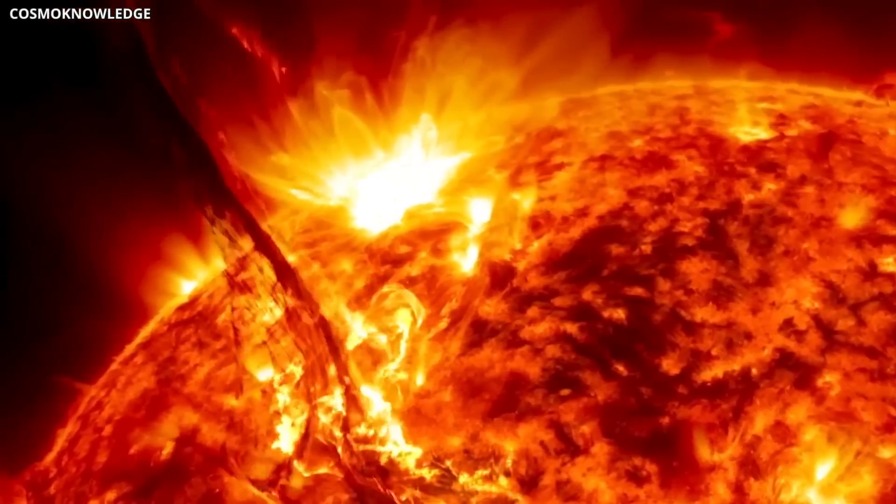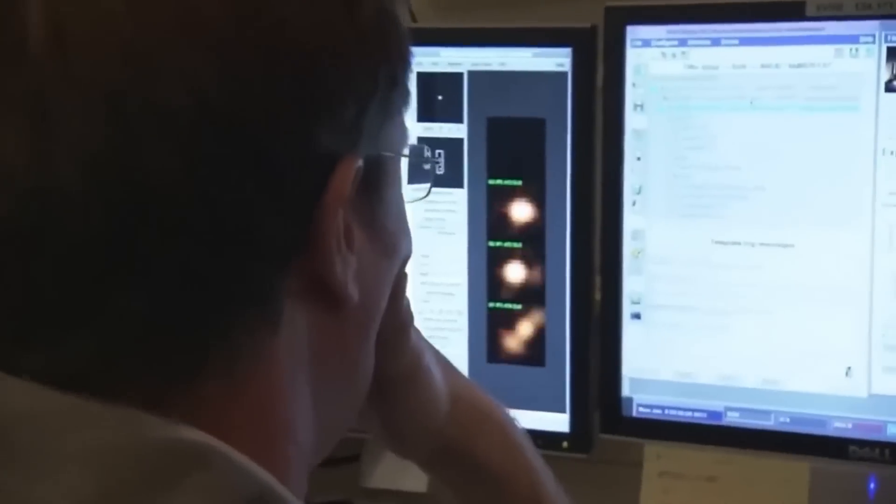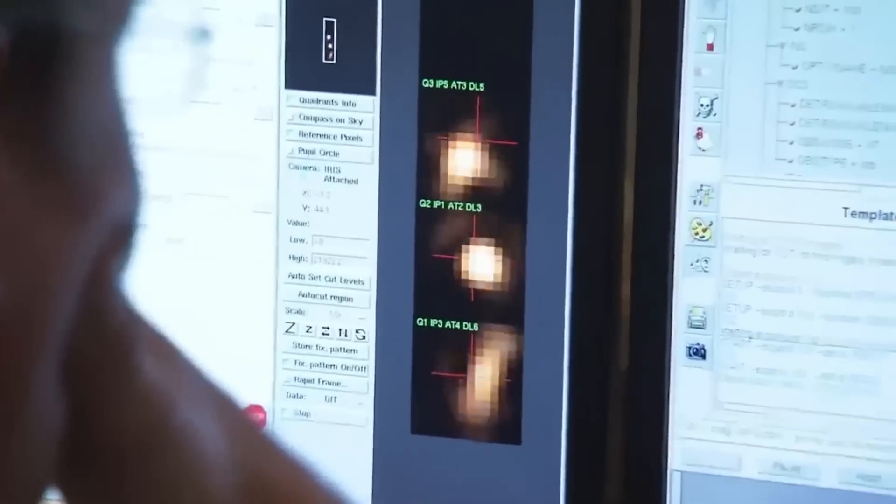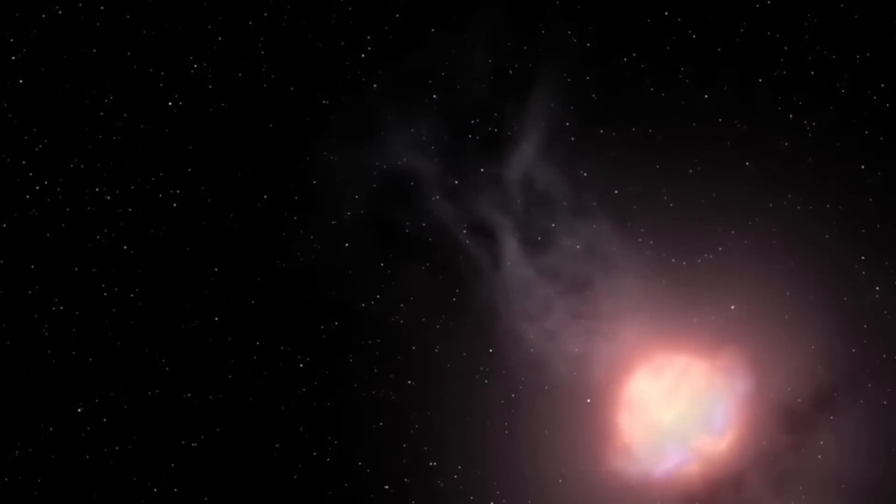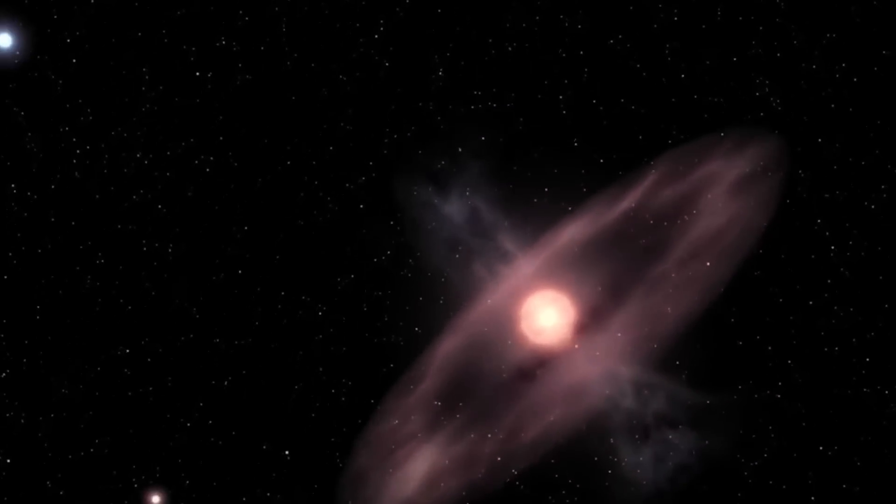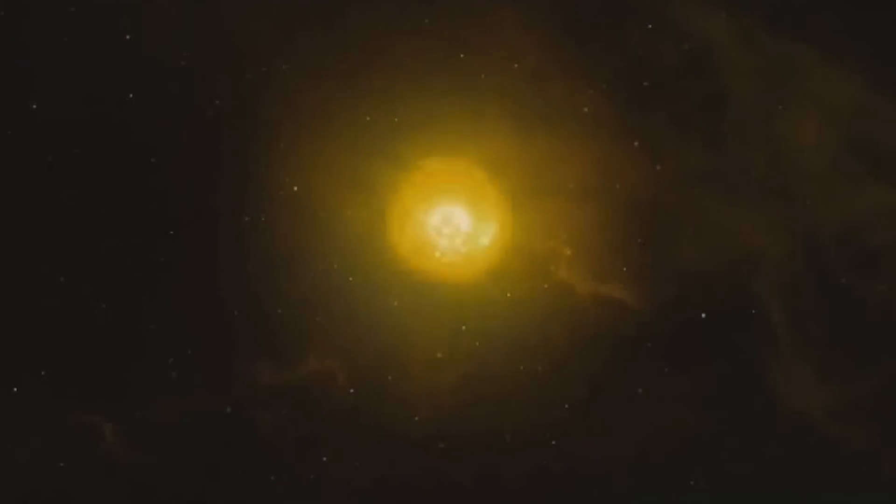So, with all of the warnings about Betelgeuse's imminent explosion, what would really happen to the Earth if such an event were to happen? Whenever a star explodes, the sheer amount of energy that is released from the explosion causes immense damage to all of its surroundings for light-years.